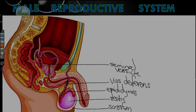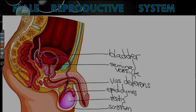The seminal vesicle is located behind the bladder. The bladder is not strictly part of the reproductive system, but it is part of the entire structure in the front. The seminal vesicle is behind the bladder, and the bladder is the area where urine is stored. You will notice that the bladder also empties into the same tube that will bring the sperm out of the body.